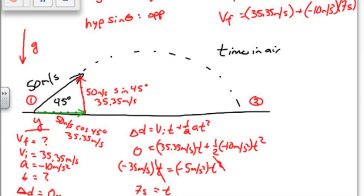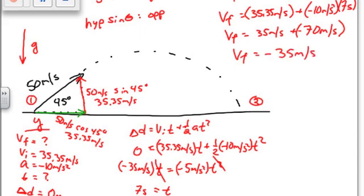I rounded these off. And I'll round this one off. So it's negative 35. The final velocity is 35 meters per second plus negative 70 meters per second. So final velocity is negative 35 meters per second. So initial velocity was 35 meters per second. Final velocity is negative 35 meters per second.